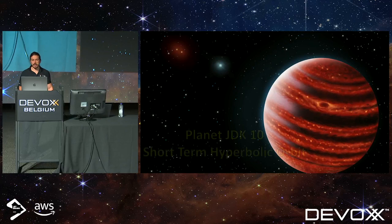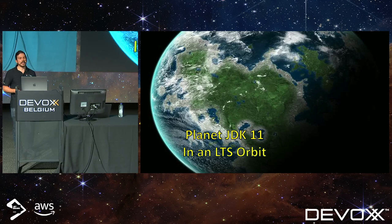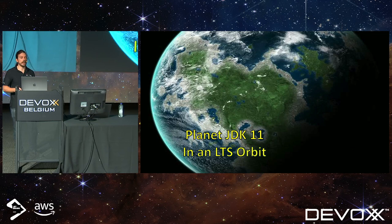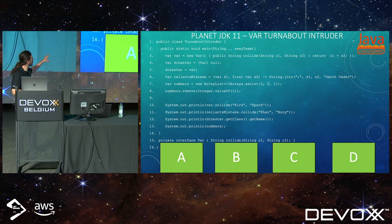Let's go to the next planet, JDK 10 — a short-term version. LTS stands for long-term support version, meaning it's supported longer by Java vendors like Oracle, Azul, and many other companies. This challenge is about type inference.